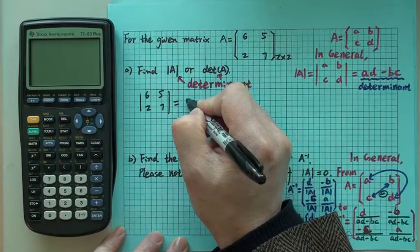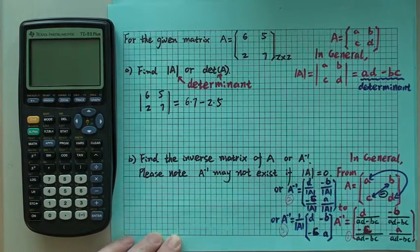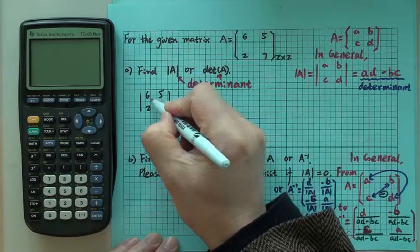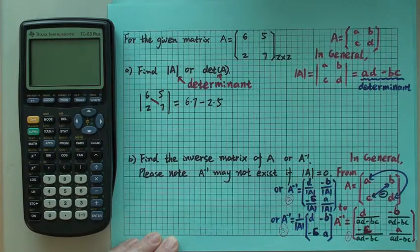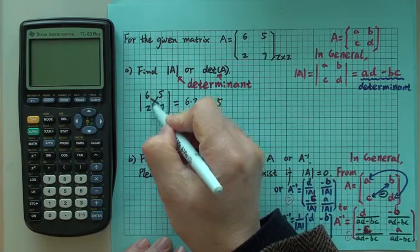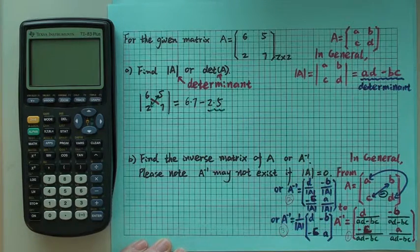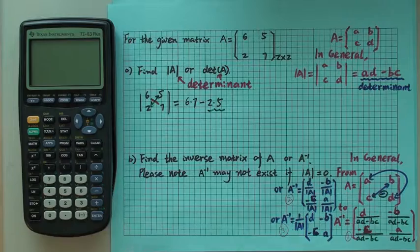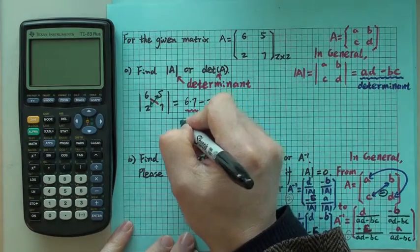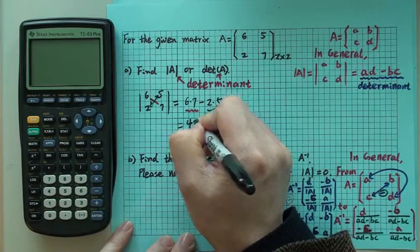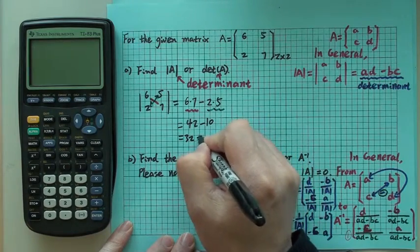So what we do is 6 times 7 minus 2 times 5. You have 6 times 7, and then the green one is right here. So what we get is 42 minus 10, which is 32. Of course, 32 is not zero.